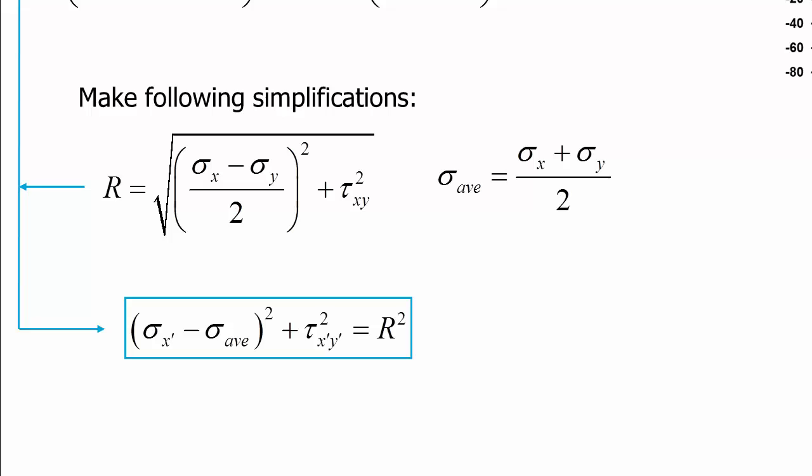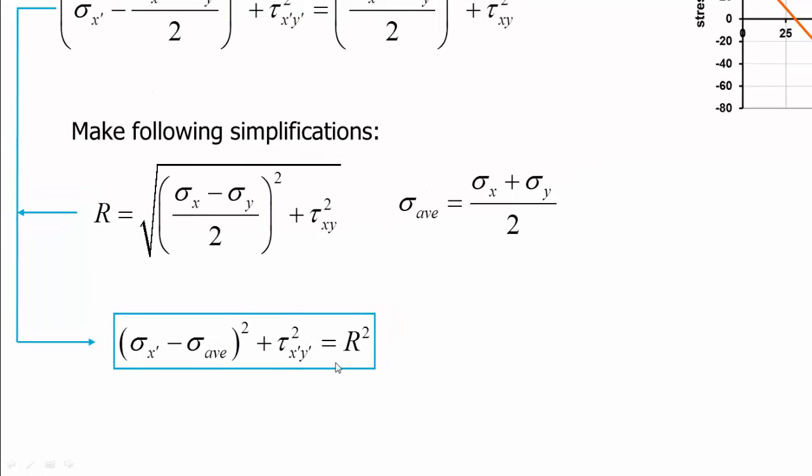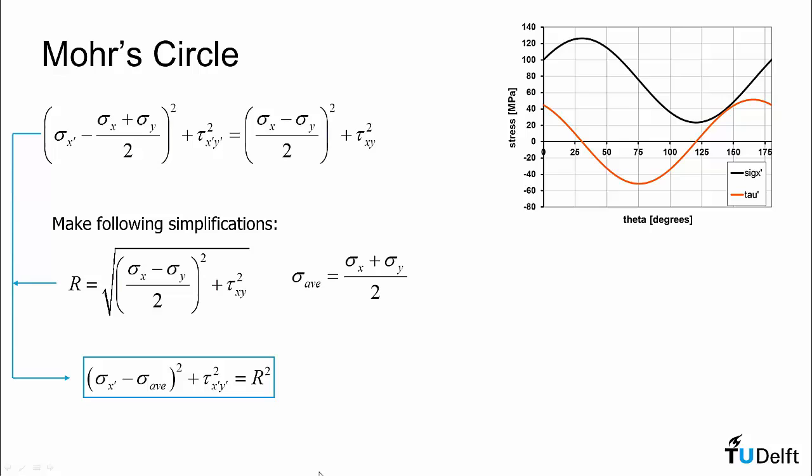If we take these simplifications and substitute them in, we get the following equation for Mohr's circle: sigma x prime minus sigma average all squared plus tau x prime y prime squared equals r squared. This gives us an equation where the x-axis is normal stress in the x prime direction, and the y-axis is tau x prime y prime, and it gives us a circle of radius r that is centered at the average normal stress.